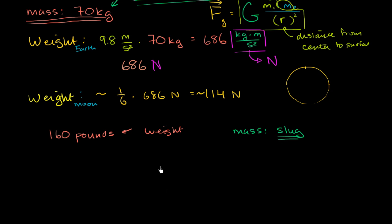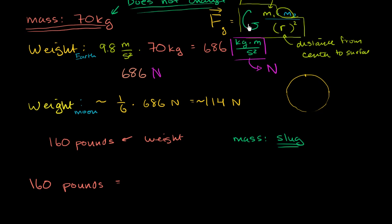So if you wanted to figure out how many slugs you are, so your weight, the force of gravity on you is 160 pounds. 160 pounds. This is going to be equal to, if you were to calculate all of this stuff, the force of gravity on the surface of Earth, but if you were to do it in imperial units, instead of getting 9.8 meters per second squared, you would get 32 feet per second squared, which is also the acceleration near the surface of the Earth due to gravity in feet and seconds.